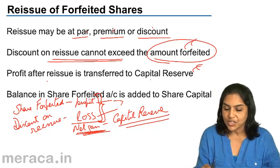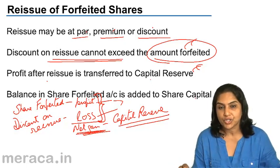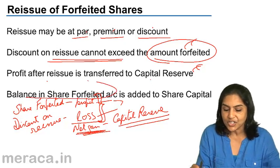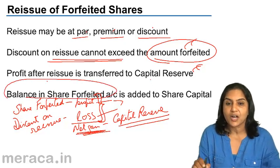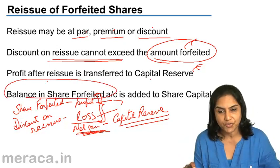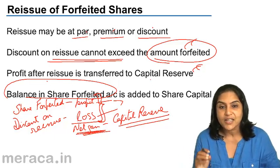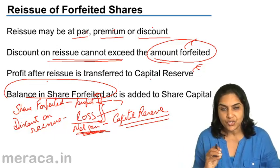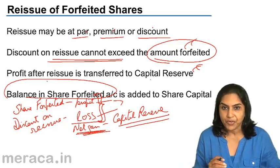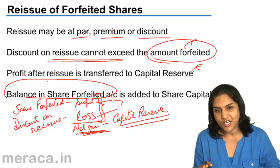The balance in the shares forfeited account is added to the share capital. The balance at any point in time in the shares forfeited account represents the amount received on shares forfeited but not yet reissued.